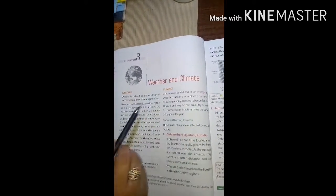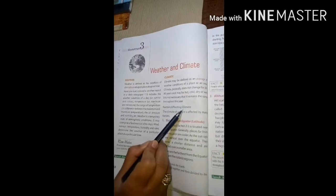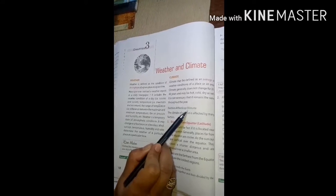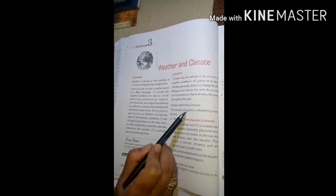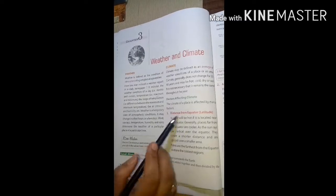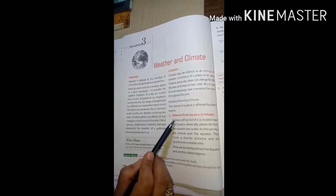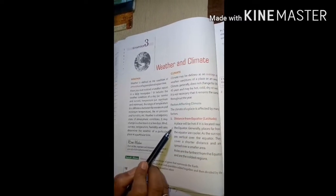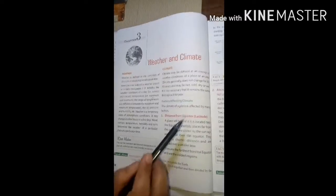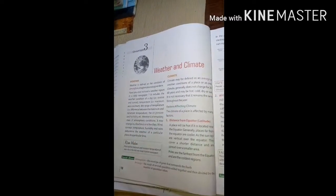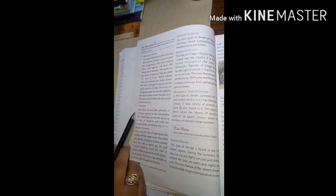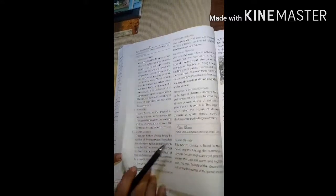Now children, our today's topic will be factors affecting climate. Climate depends largely on the relief features of land. There are certain factors that affect the climate of a place. These factors are distance from equator, altitude, distance from the sea, direction of winds, humidity and ocean currents.